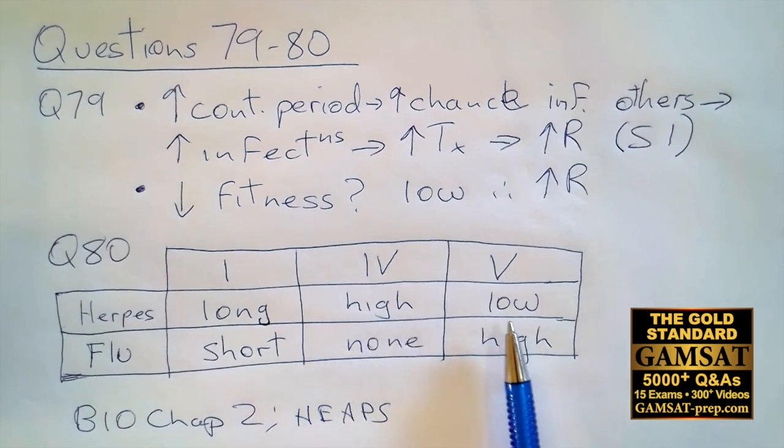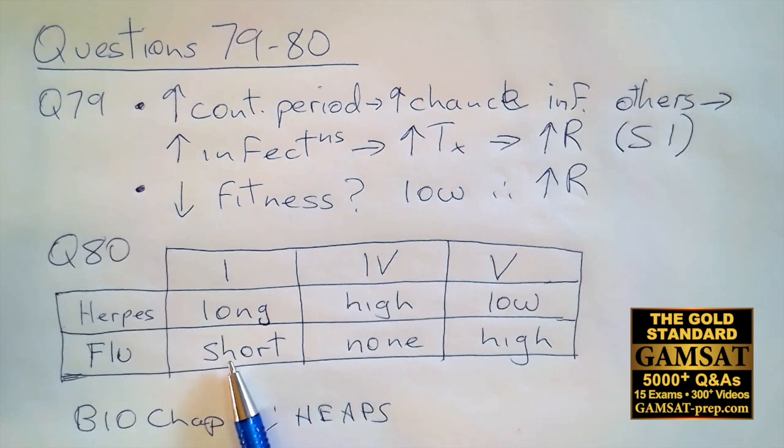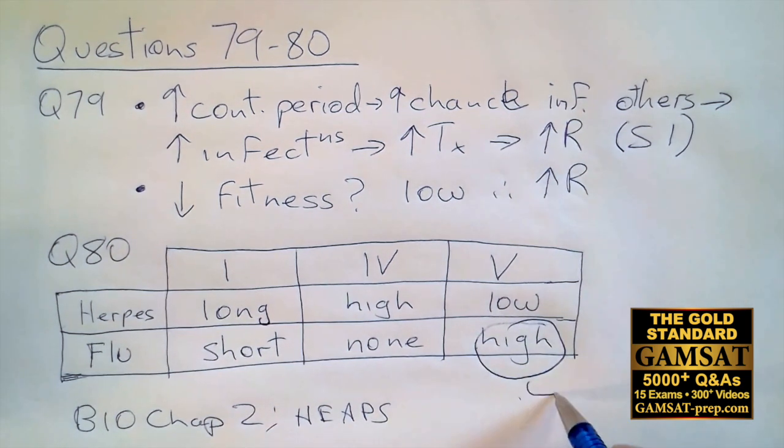And now we move on to Roman numeral five, a low probability that treatment will lead to resistance. So we just have to put low probability because there's no double negative or any strange thing like that. And now the line for influenza A or flu. There is a short contagious period. The reduction in fitness is zero after it becomes drug resistant. And there is a high probability that drug resistance will develop. So this is very clear. There's a high probability of resistance.